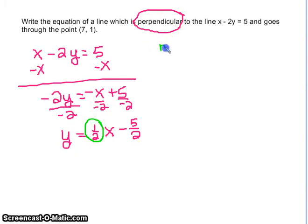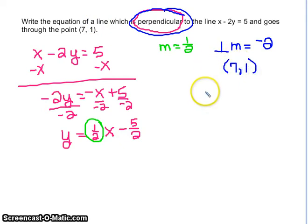I know that my slope right now is 1 half, and if I want to find the perpendicular slope, I'm going to use this to represent perpendicular slope, it is going to be negative 2. So negative 2 is my new slope, we're going through the point 7, 1.